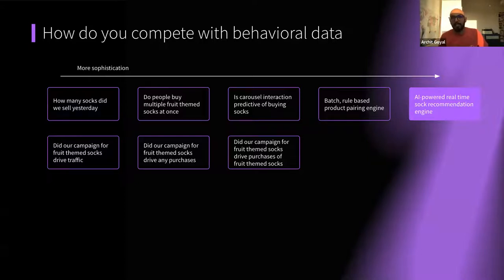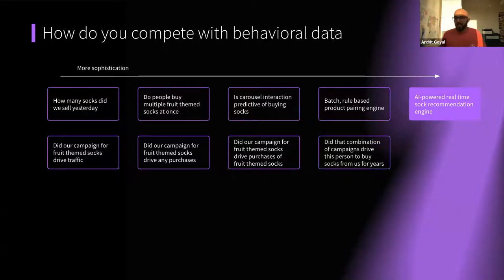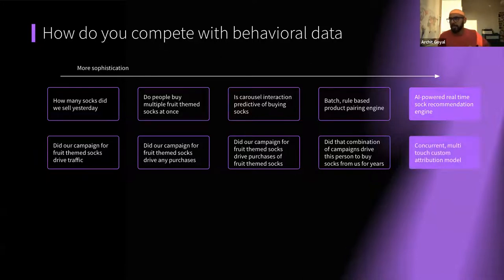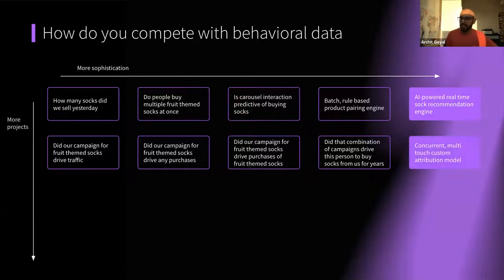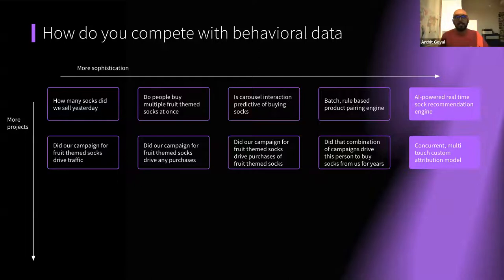So it's starting to evolve the sophistication of the attribution model as well, getting onto multi-touch and concurrent attribution models. Did a combination of campaigns over years drive a high lifetime value user to our site and encourage repeat purchases? That leads to concurrent, multi-touch, custom attribution. The second thing a company should do alongside building a deep understanding is to start answering more questions and doing more projects with the behavioral data.